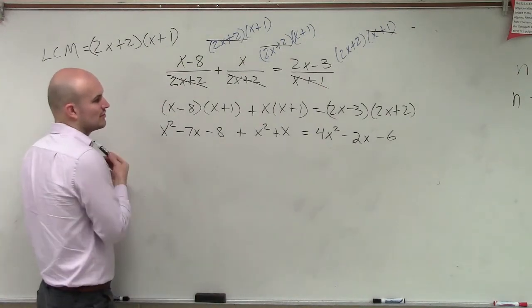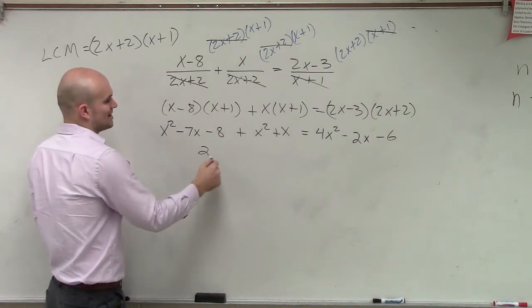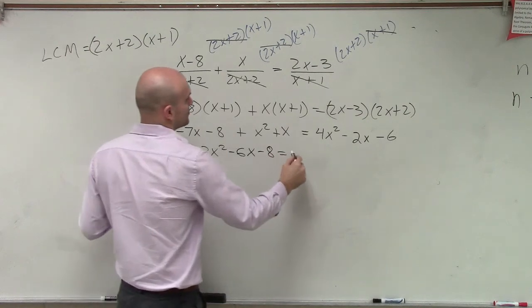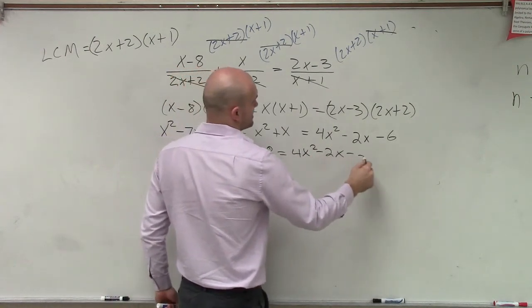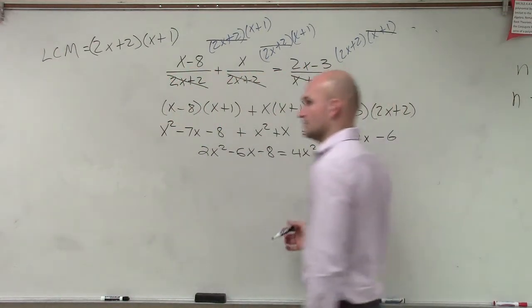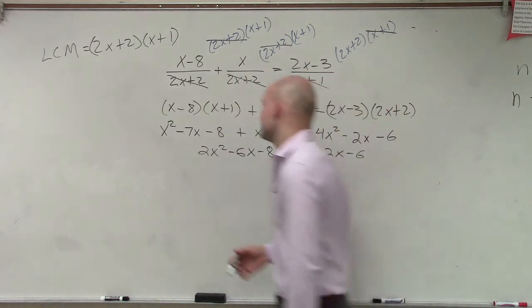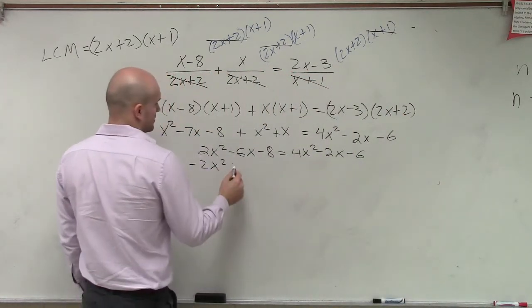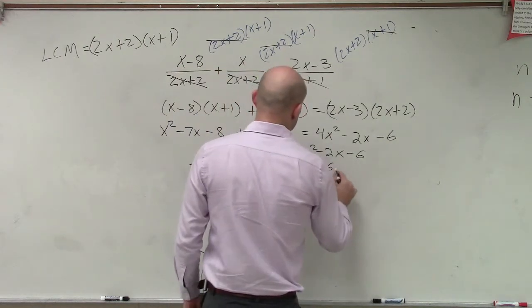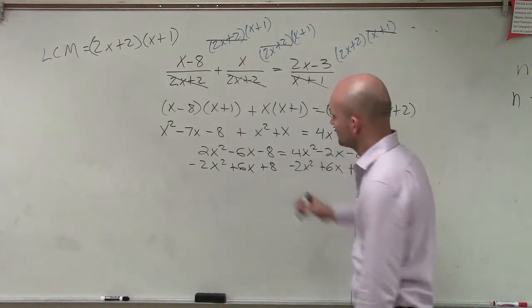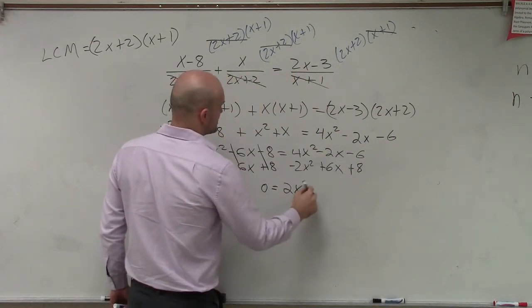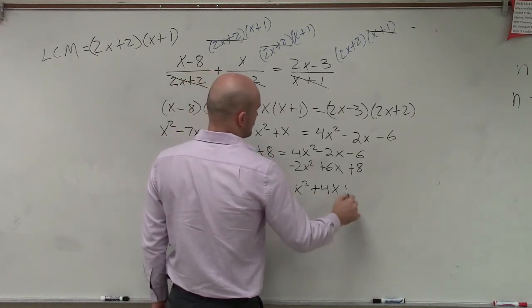So x squared plus x squared is 2x squared. Negative 7x plus x is negative 6x minus 8 equals 4x squared minus 2x minus 6. Right? Now let's get everything over to the left side. Over to the right side? Okay, let's do it to the right side. So I'll subtract 2x squared, I'll add 6x, and I'll add an 8. Those all go to 0.